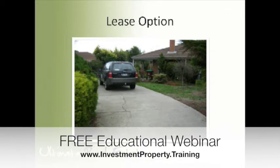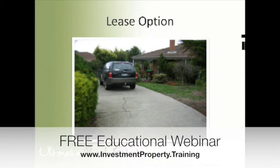One of the first lease options I ever did was in Cranbourne in Victoria, about 45km south east of the city. This is a strategy that works in every state and any sort of location. I find the easiest place is usually first homeowner suburbs, but it works in the country, in mining areas, and in every single state. Option agreements are Australia-wide, so that's one of the most common questions I get.